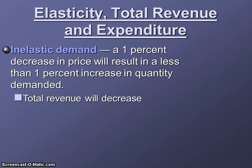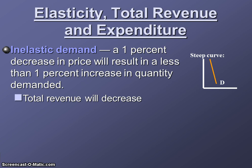At one end of the spectrum, we have what we call inelastic demand. Inelastic demand means that a 1% decrease in price will result in a less than 1% increase in quantity demanded. Or, another way of putting this: when price drops, total revenue will decrease. A demand curve with inelastic demand tends to have a steeper slope. When I think of inelastic, I think it doesn't stretch — when price changes, the quantity demanded doesn't stretch as much. The price change is going to be greater than the change in quantity demanded. So within inelastic demand, when price drops total revenue will decrease, and when price increases total revenue will increase.